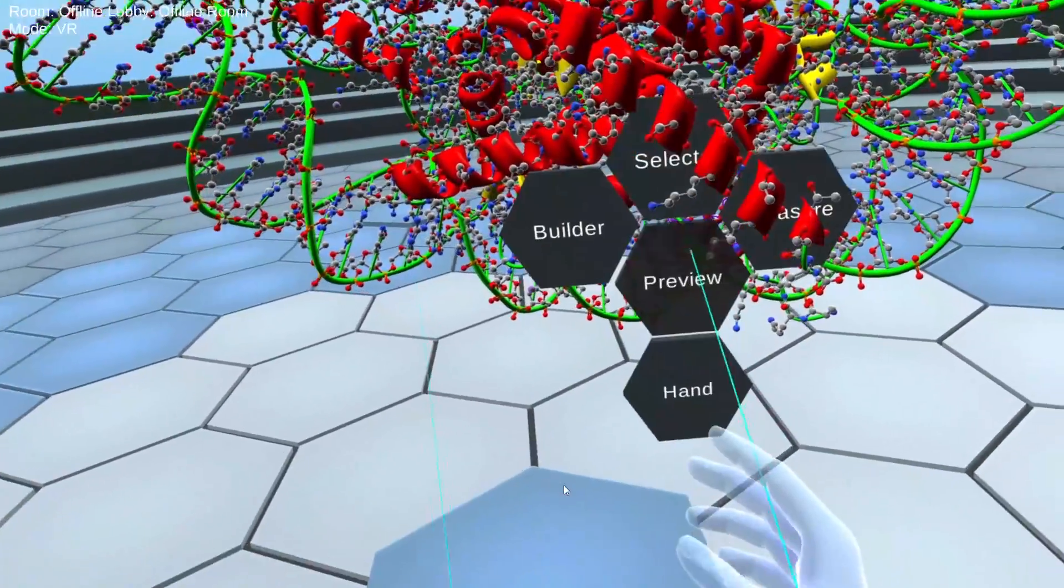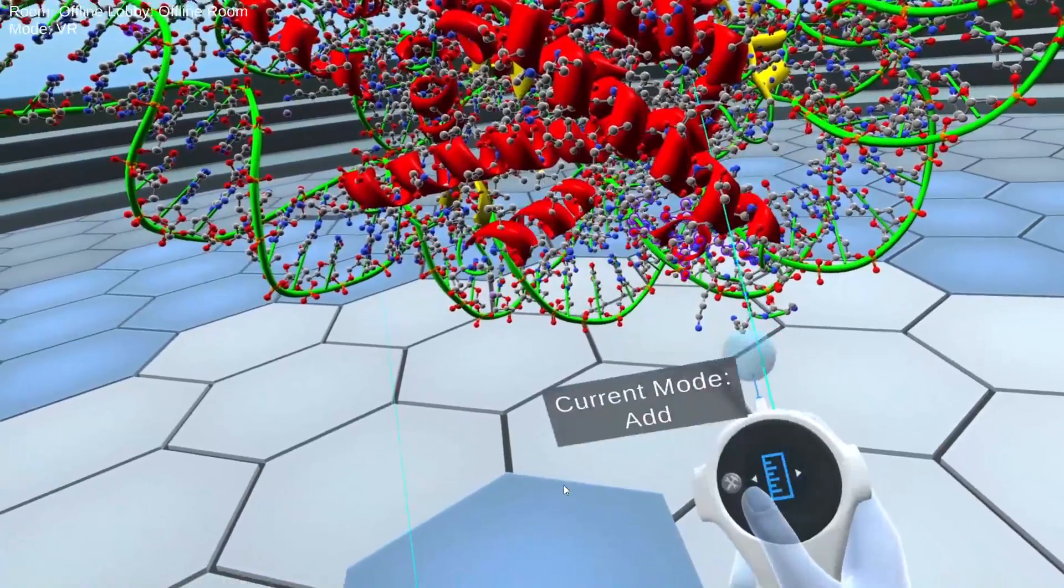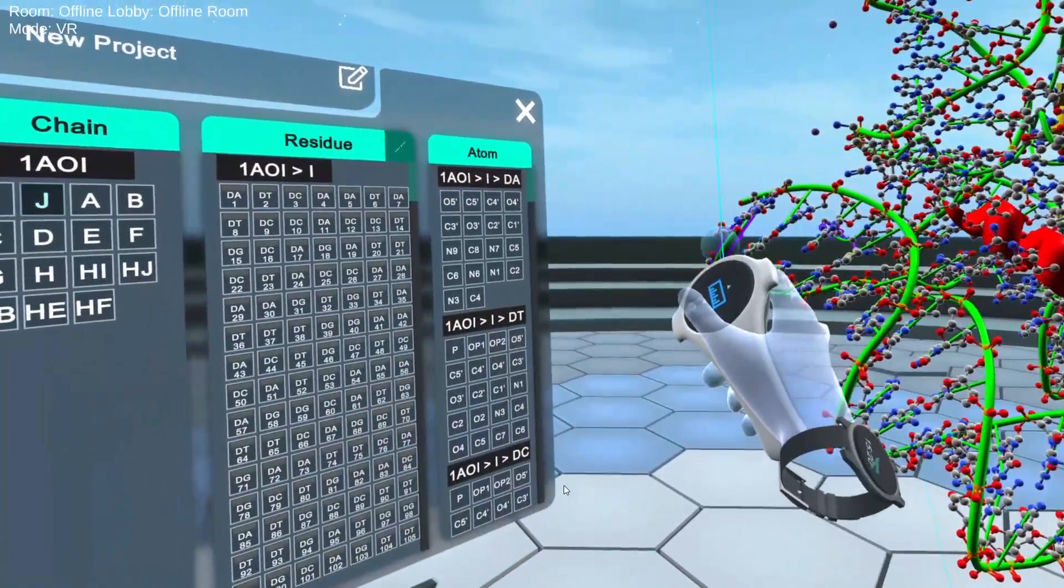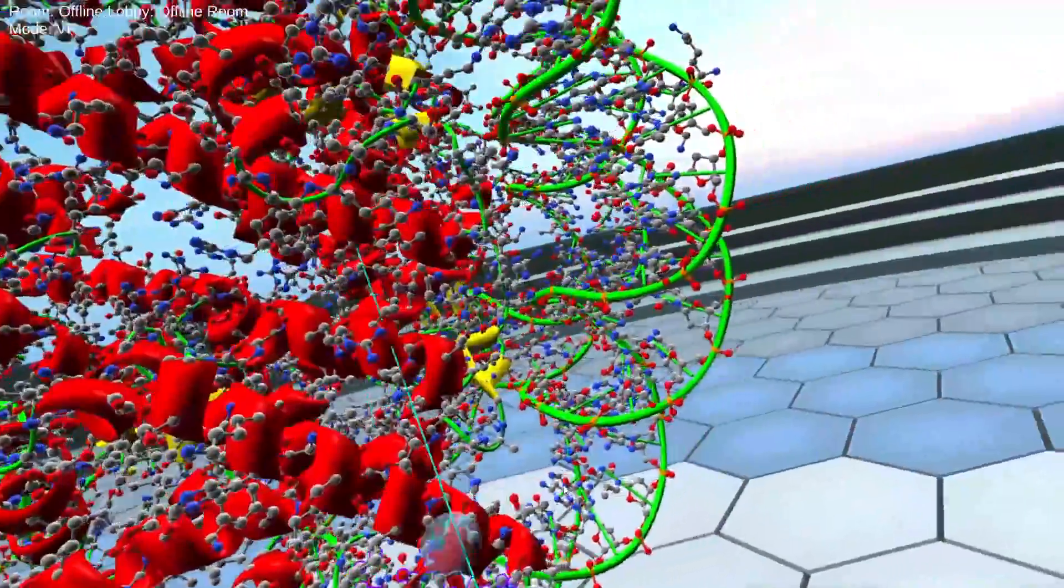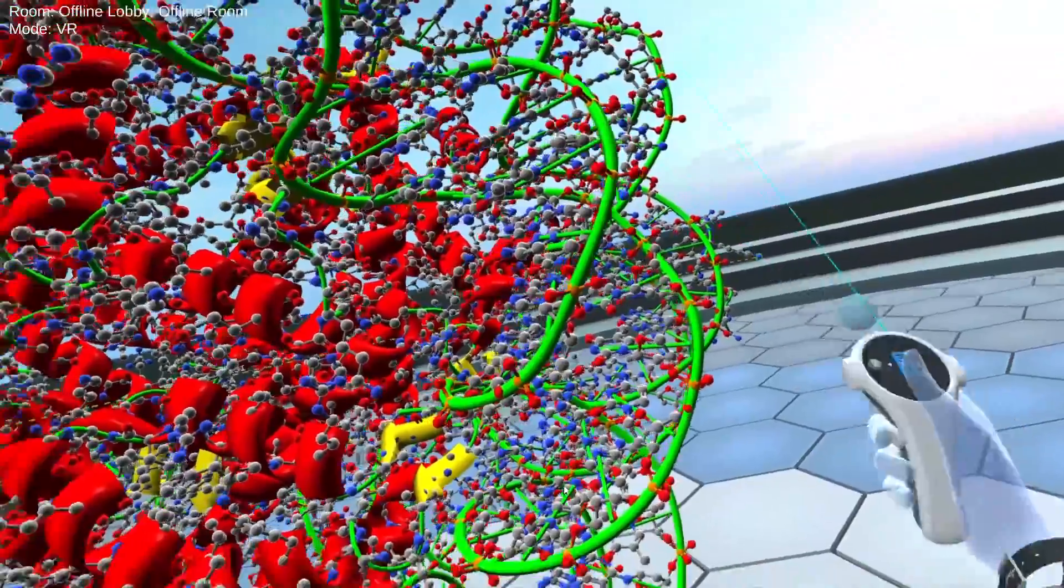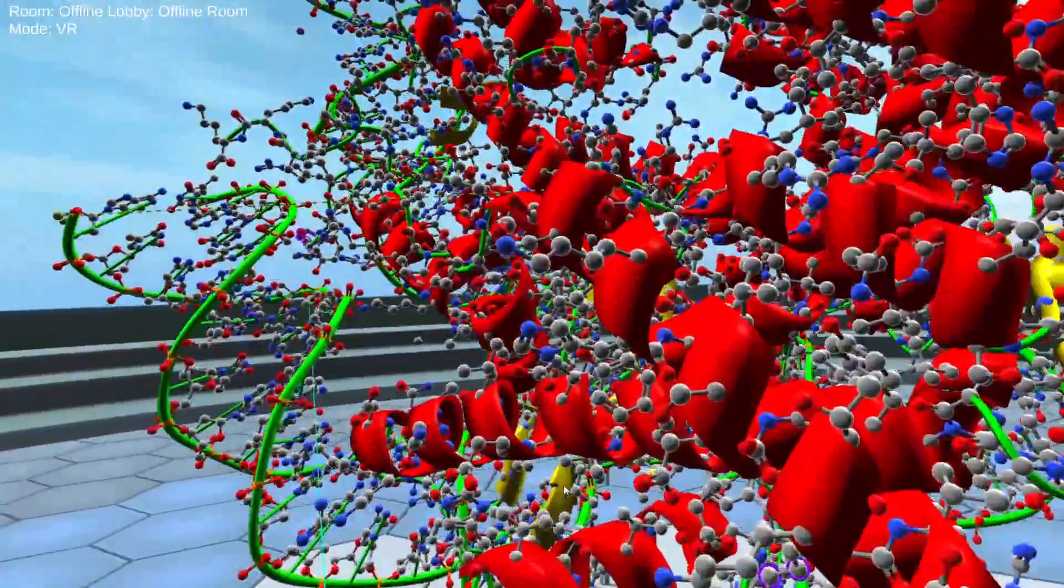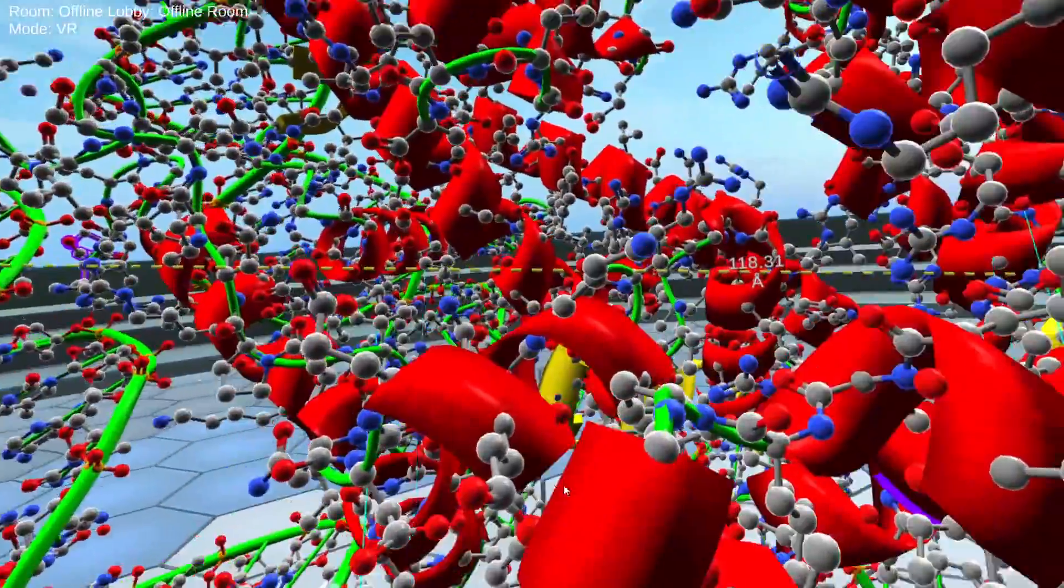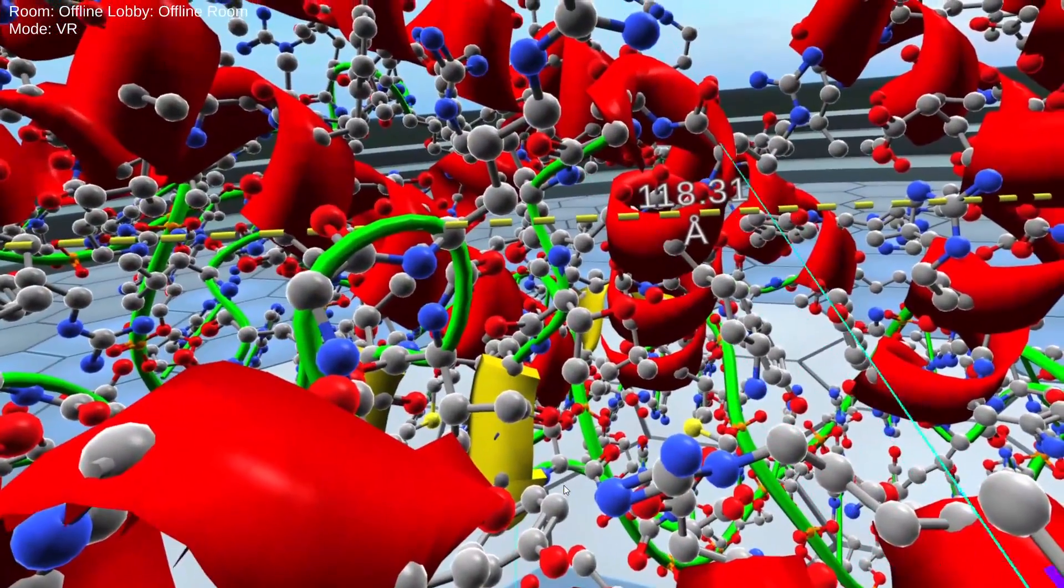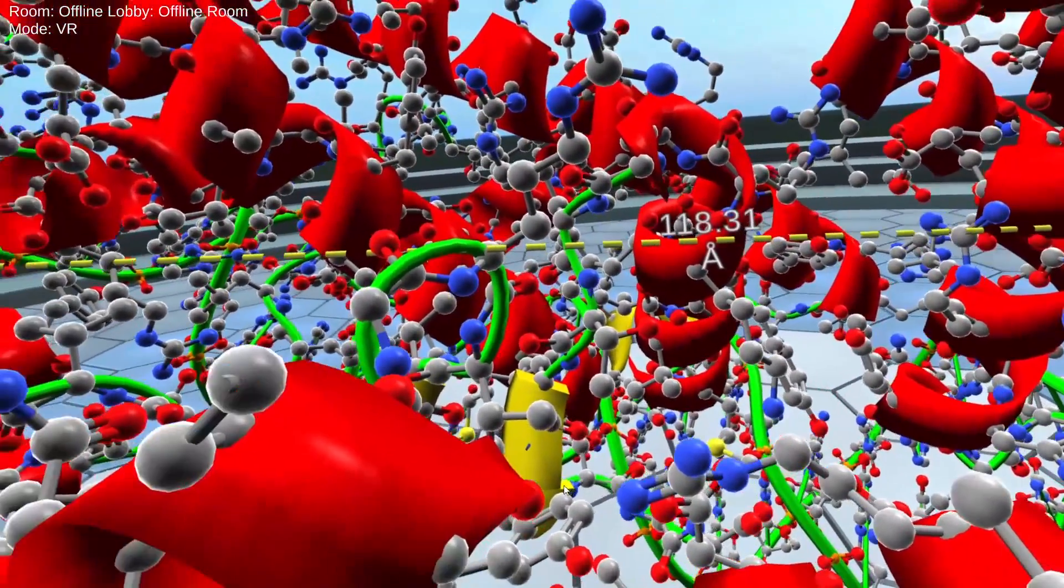And one thing we can also do, why don't we get a sense of the size of this thing here. So we know that we can measure distances with this tool. And so let's just go all the way across here. Let's see what the dimensions are from one end to another. So let's zoom in a little bit so we can see what we just did. And it looks like from one edge to the other, we've got about 118 angstroms or 11.8 nanometers.